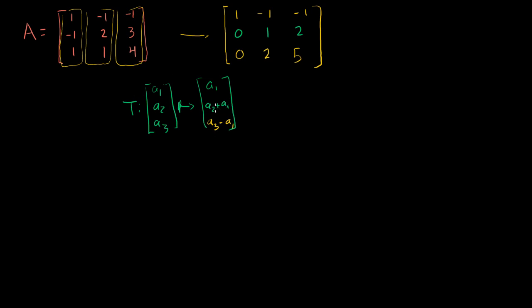This was just a linear transformation. And any linear transformation you could actually represent as a matrix-vector product. So for example, this transformation — I could represent it to figure out its transformation matrix. If we say that T of x is equal to some matrix S times x — we already used the matrix A so I have to pick another letter. To find S, we just apply the transformation to all of the standard basis vectors of the identity matrix.